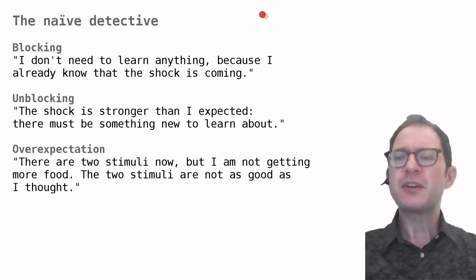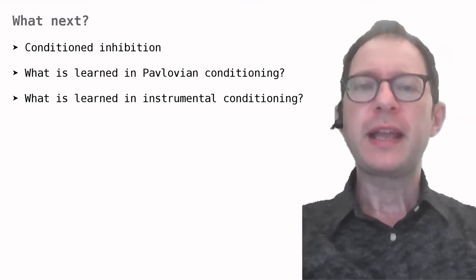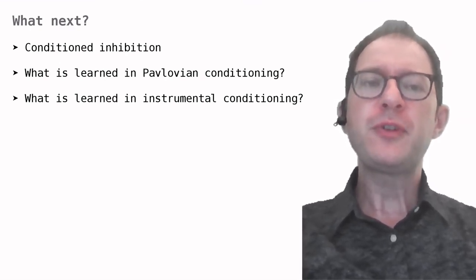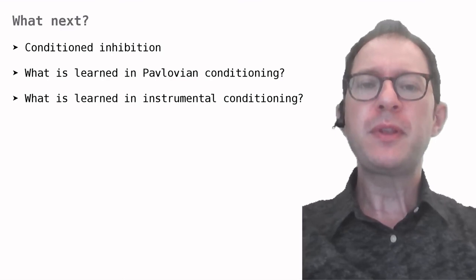It's like they were thinking, there are two stimuli now, but I'm not getting more food, so the two stimuli are not as good as I thought. And one of these two stimuli is the light that is later tested. These explanations are interesting, but how can we know if they are correct? As I mentioned earlier, in future lessons we will look at a nice theory of learning called the Rescorla-Wagner model that can explain most of the things we are seeing.